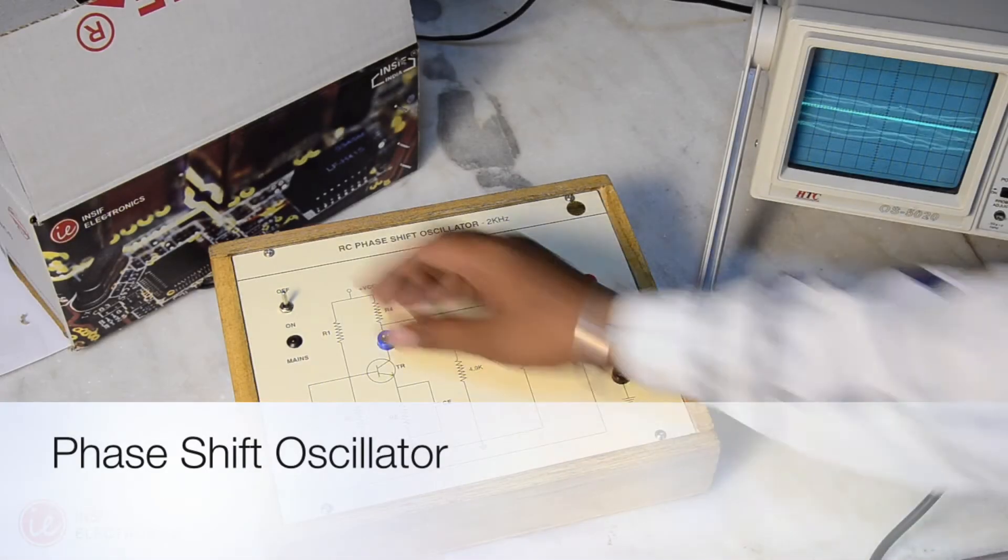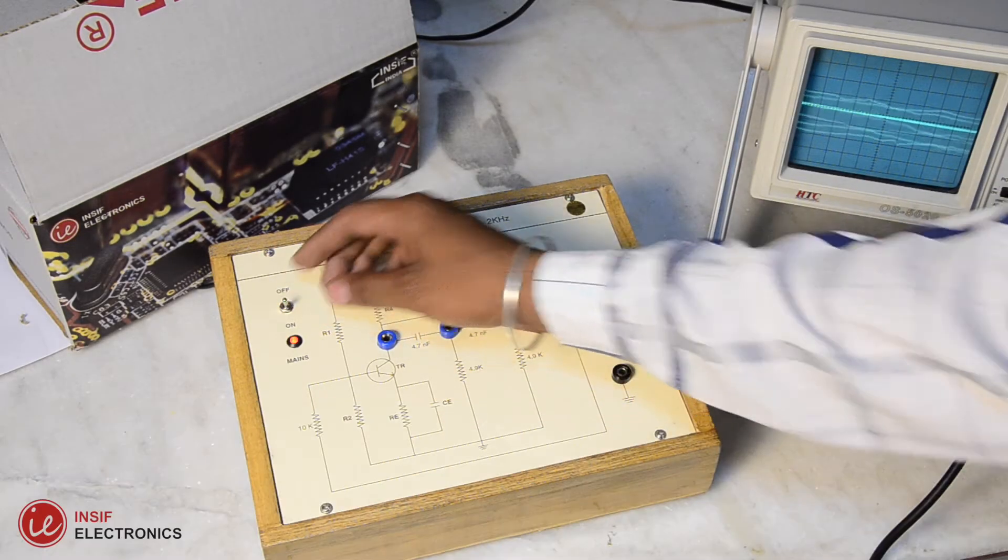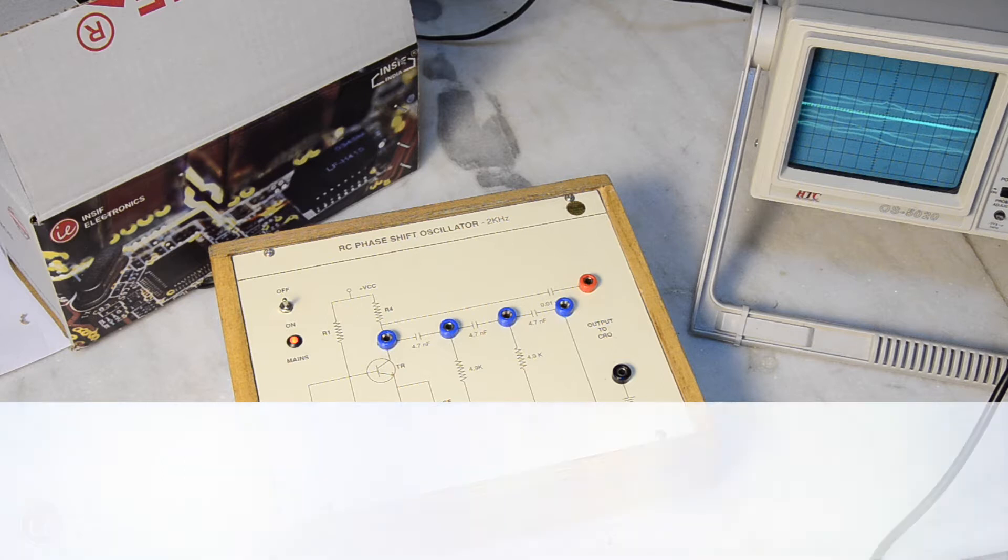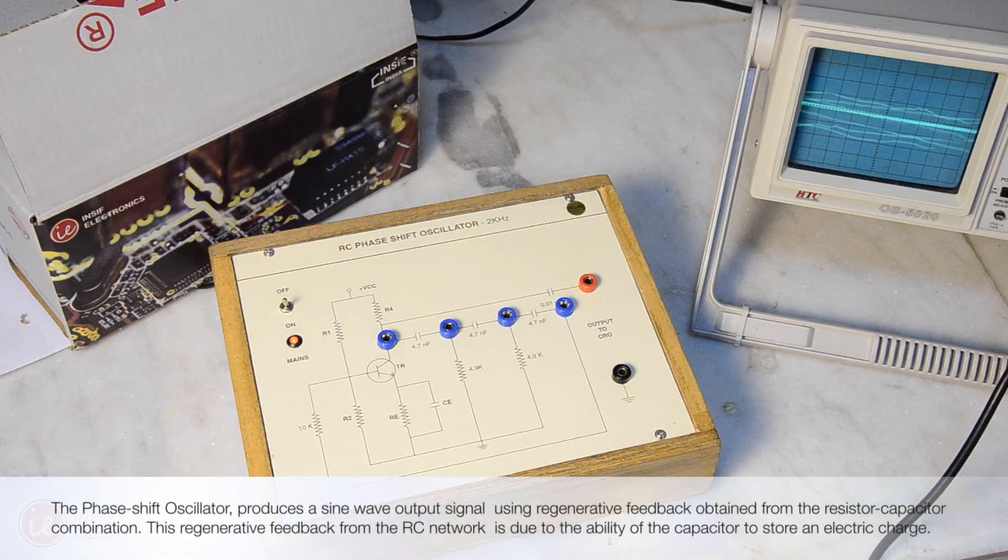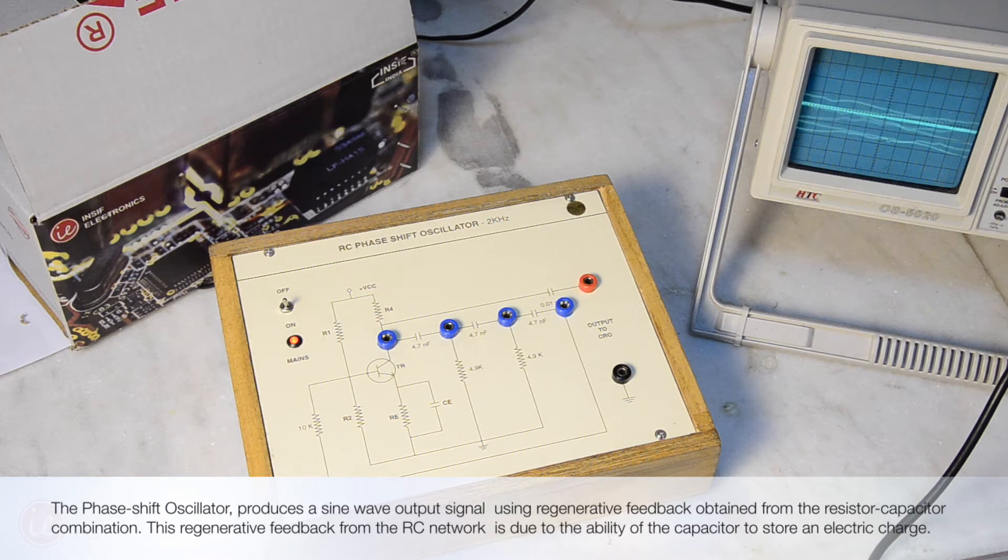This video is to study the RC phase shift oscillator and observe its output waveform on CRO. The phase shift oscillator produces a sine wave output signal using regenerative feedback obtained from the resistor-capacitor combination. This regenerative feedback from the RC network is due to the ability of the capacitor to store an electric charge.